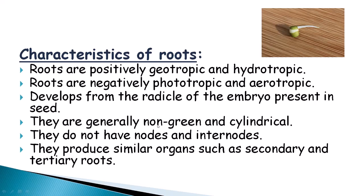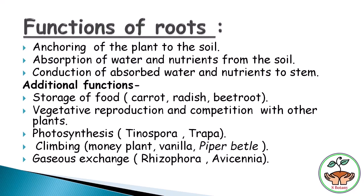Roots are generally non-green, meaning there is an absence of chlorophyll, and they are cylindrical in shape. They do not have nodes and internodes — that is a characteristic of the stem. Roots produce similar organs such as secondary and tertiary roots, whereas the stem produces different organs like leaves and lateral branches.